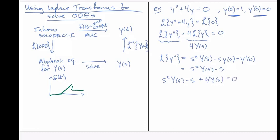So now this is the algebraic solve step. So we have s squared plus 4 multiplied by Y(s), I'll bring the s over to the other side so I have all the y's on one side, and now I can solve for Y(s) and that's equal to s over s squared plus 4.